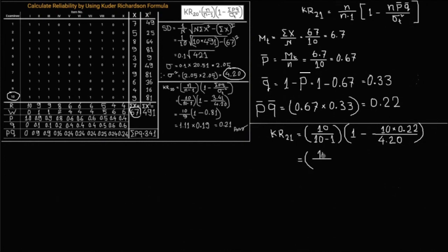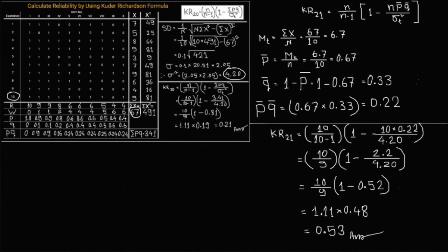So 10 by 10 minus 1 is 9. 1 minus 10 into 0.22 is 2.2 by 4.20. So 10 by 9 is 1.11 into 1 minus 0.52 is 0.48. So 1.11 into 0.48 is 0.53. The answer is 0.53.